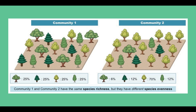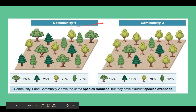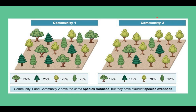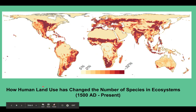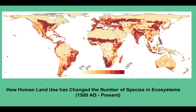Although both communities contain the same number of species, community one has a more even distribution of species and is therefore more diverse than community two. We can also look at how human impact has affected the number of species in ecosystems. Since 1500 AD, the darker the shade on the map, the fewer species in that area. You can see that humans have drastically affected the number of species in an ecosystem due to how land is used or manipulated.